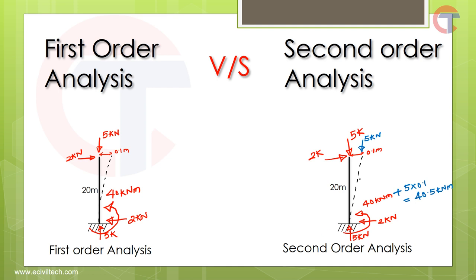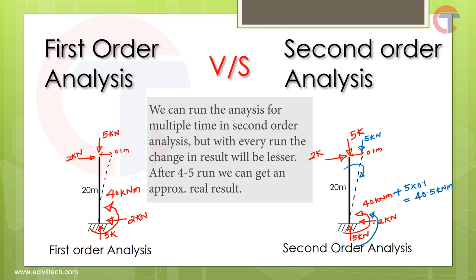The additional moment acts in the same direction as the original moment, and its reaction is in the opposing direction. So the initial 40 kilo Newton meter plus 0.5 kilo Newton meter are added, giving a total moment of 40.5 kilo Newton meter on this member — this is the second run. We can run this multiple times because due to this additional 0.5 kilo Newton meter moment there will be a little more deflection, but after 4 to 5 runs the change in result becomes very negligible.